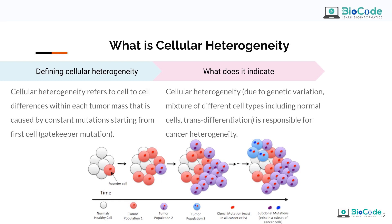Cellular heterogeneity can be caused by genetic variation, a mixture of different cell types including normal cells, and trans-differentiation. This leads to cellular and cancer heterogeneity, and this is what we mean when we talk about cell sub-population analysis due to a disease. In summary, normally each cell may have a different gene expression pattern. In a disease state, as it matures over time, there will be various different populations of cells with expression values different from one another. This is known as heterogeneity.